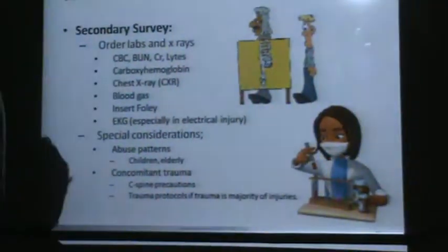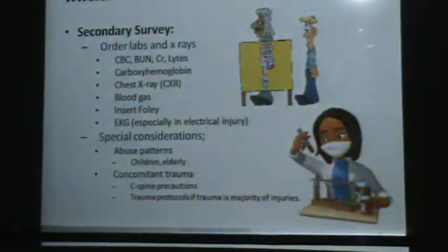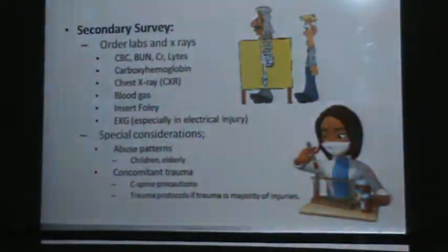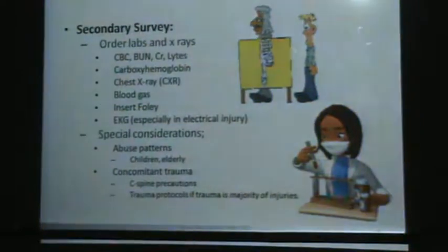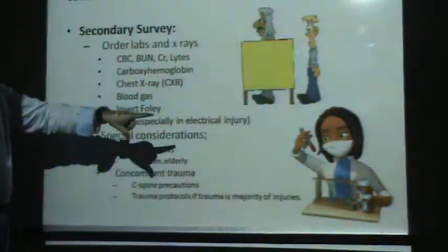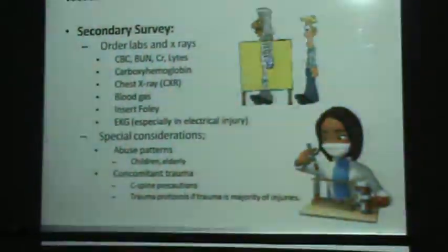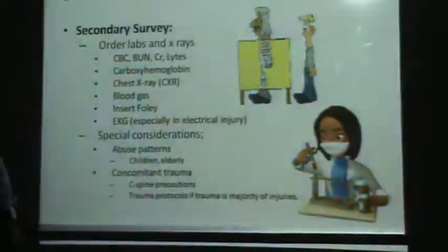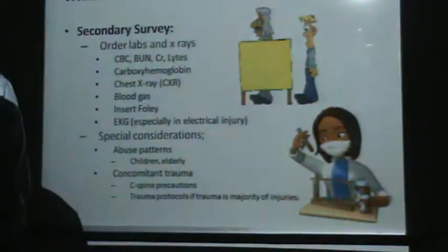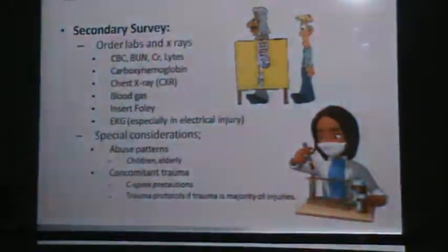We look at labs and x-rays. Chest x-rays are performed to make sure no lung damage has occurred. Lab tests include CBC (complete blood count), BUN, creatinine, all electrolytes, and the percentage of carboxyhemoglobin. We also check blood gases — the partial pressure of oxygen, CO2, and CO.